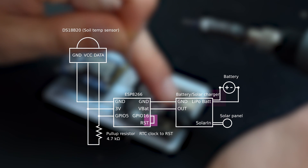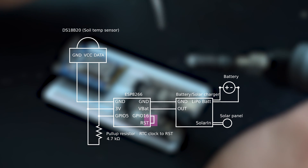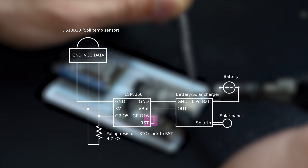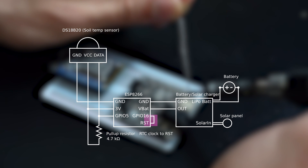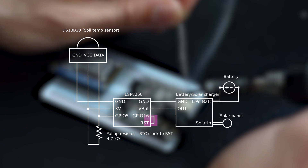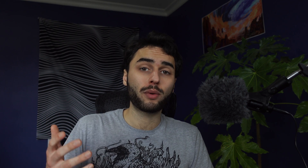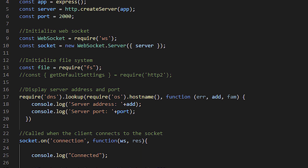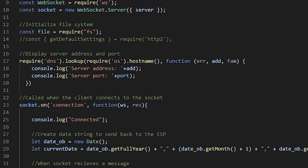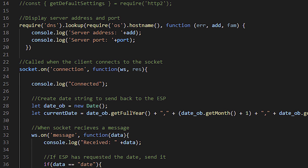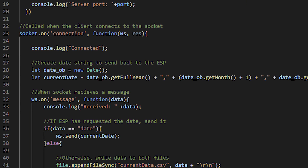I've also wired GPIO 16 to reset, which enables us to use the real time clock on the ESP to wake itself up, allowing us to use deep sleep — which saves a lot of power. I needed a way for my ESP to talk to my computer, and for that I chose a Node.js web server. The server is pretty simple: it starts up whenever I start my PC, listens on a certain port for messages, and whenever it receives one, it prints it to a CSV file, which we can then read from in Excel later on.